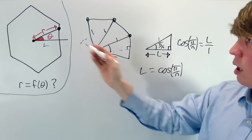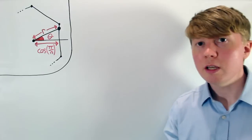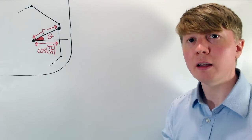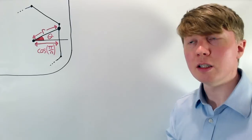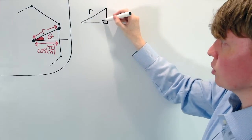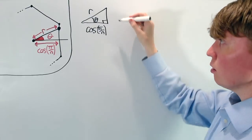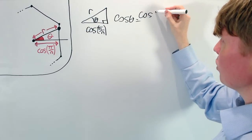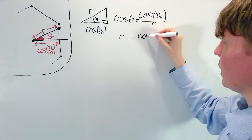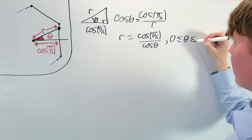Working more generally, the equivalent of this horizontal length is always cos(π/n). We can use this to find r in our picture. Copying out this right-angled triangle, r is the hypotenuse, with a right angle, an angle theta, and the adjacent side equal to cos(π/n). Using trigonometry: cos(θ) = cos(π/n) / r, so rearranging, r = cos(π/n) / cos(θ). This is true for θ between 0 and π/n.